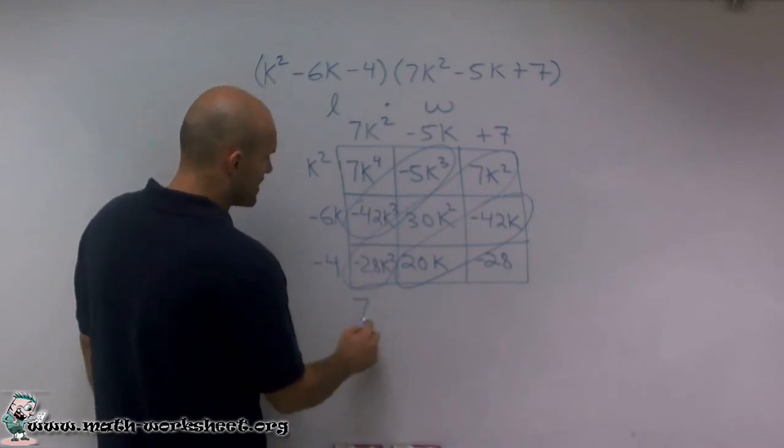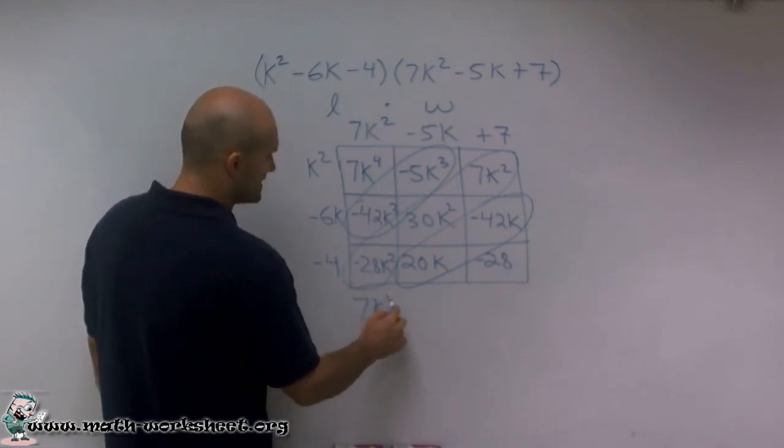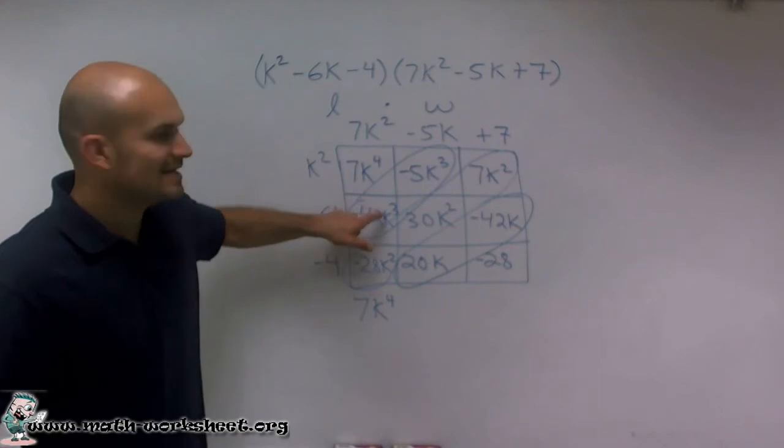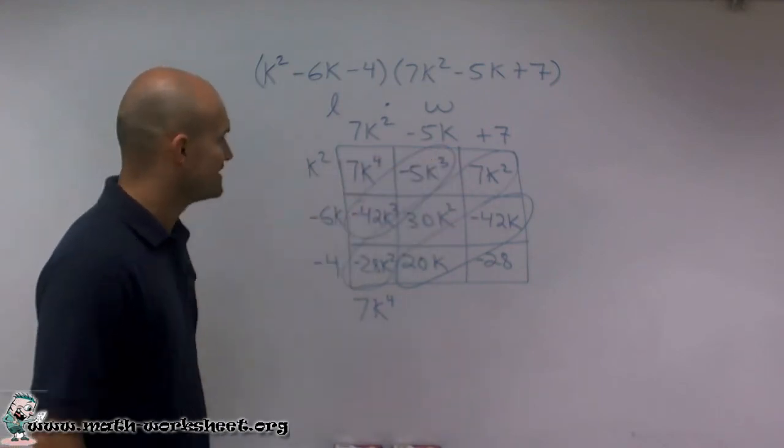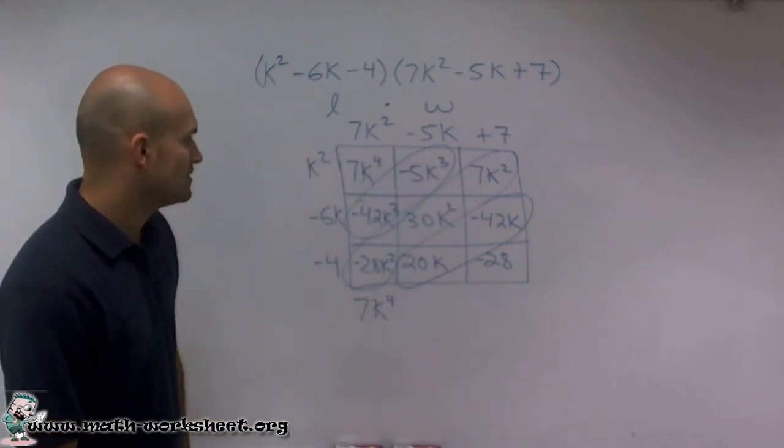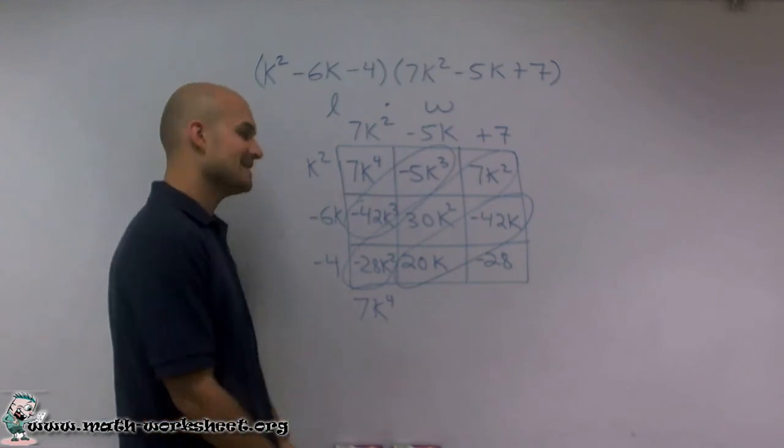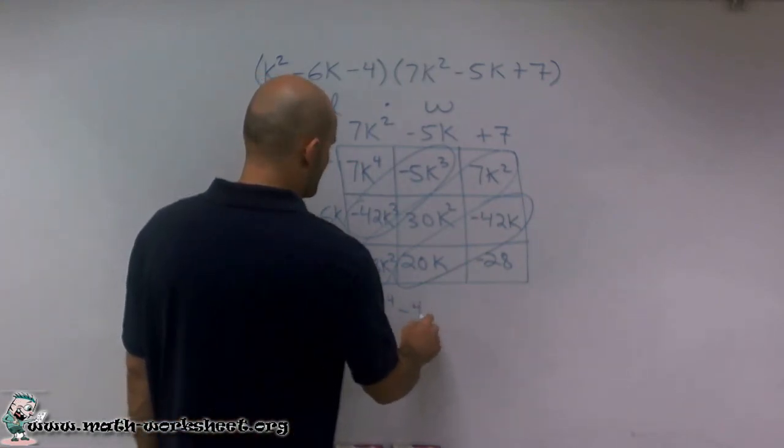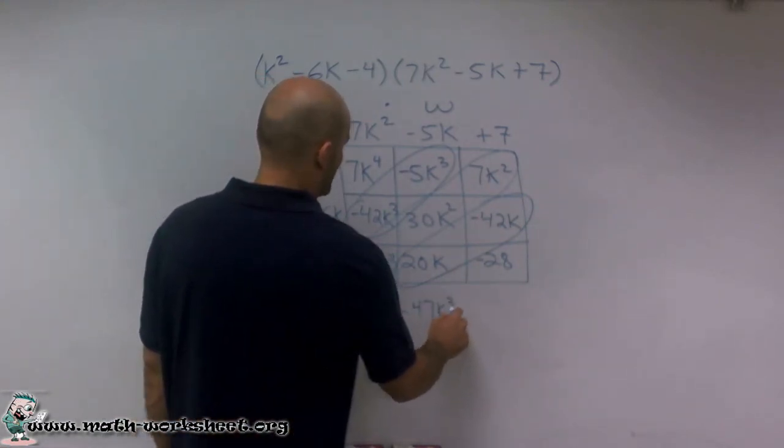So now what I'm going to do is I'm just going to write out my product. So I have 7k to the fourth. Then my k cubed, I can combine these. So a negative 42k cubed minus 5k cubed is a negative 47k cubed.